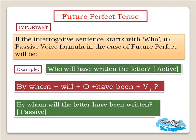If the interrogative sentence of future perfect tense starts with 'who,' the passive voice formula is as follows. Active: 'Who will have written the letter?' Passive: 'By whom will the letter have been written?' The formula is: By whom + will + Object + have been + Verb 3. So 'who' becomes 'by whom,' followed by 'will,' then the object, then 'have been,' then Verb 3.